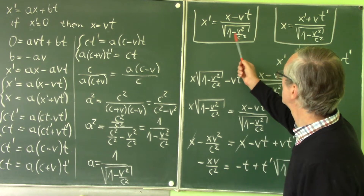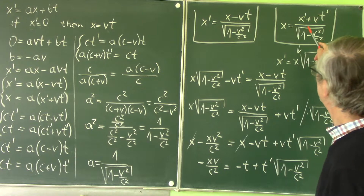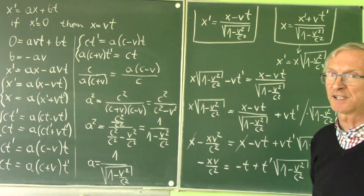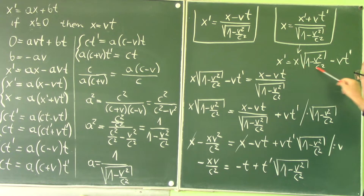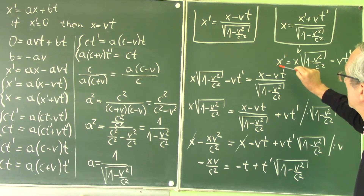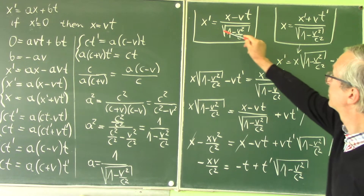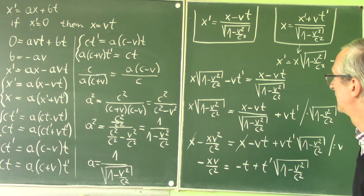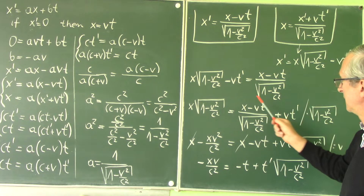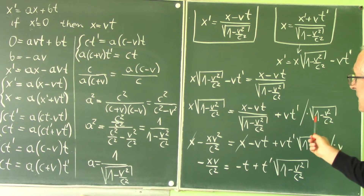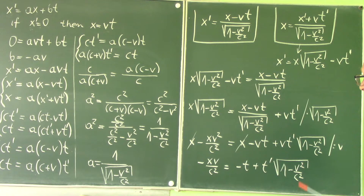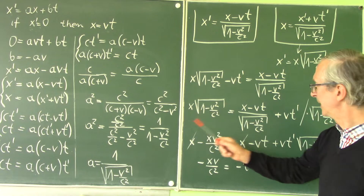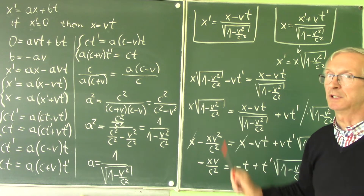We will use these two equations. From the inverse transformation we calculate x', and substitute the right-hand side into the direct transformation. Then we multiply both sides of the equation by the square root of (1 minus v squared over c squared). When this root multiplies the other root, they cancel out.